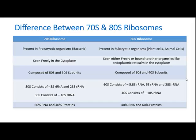The 40S smaller subunit of the 80S ribosome consists only of 18S rRNA. In the 70S ribosome, 60% of the content is RNA and 40% is protein, whereas in the 80S ribosome, 40% of the total content is RNA and 60% is protein.